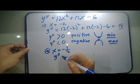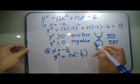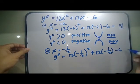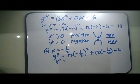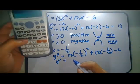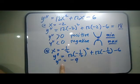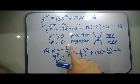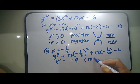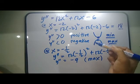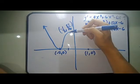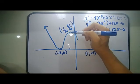At x equals negative one-half, y double prime equals 12 times negative one-half squared, plus 12 times negative one-half, minus 6, which equals negative 9. Therefore y double prime is negative, or less than 0, meaning the graph is concave downward. If it is concave downward, this is a maximum point.